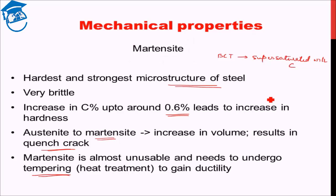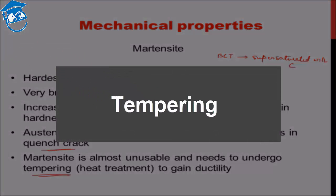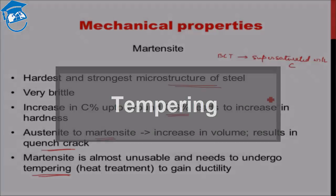So in today's lecture we saw that pearlite is the softest microstructure, bainite is the intermediate microstructure in strength, and martensite is the hardest microstructure but is quite unusable without further heat treatment. In the next class let's discuss about tempering. Till then, have a great day. Goodbye!